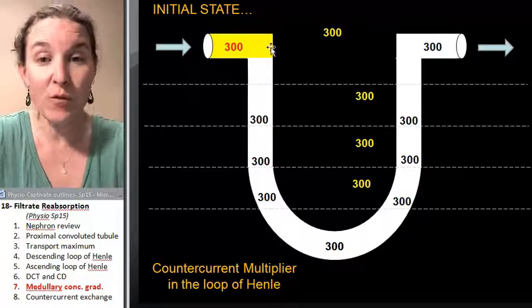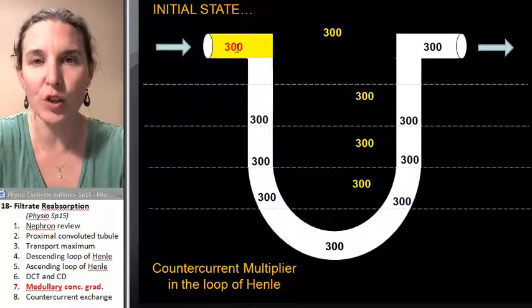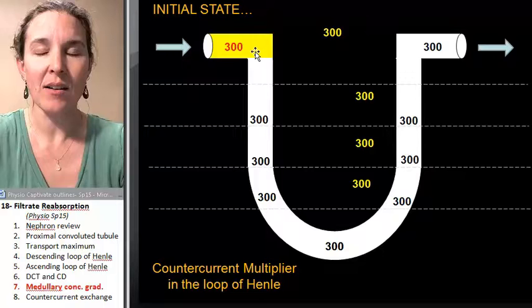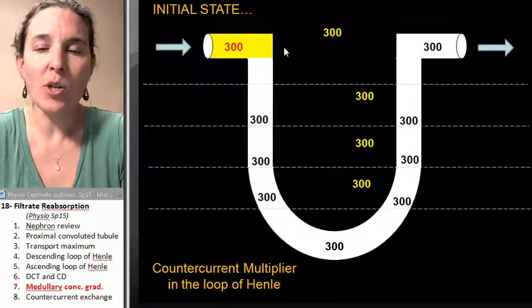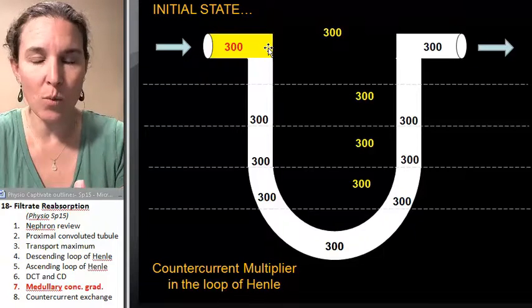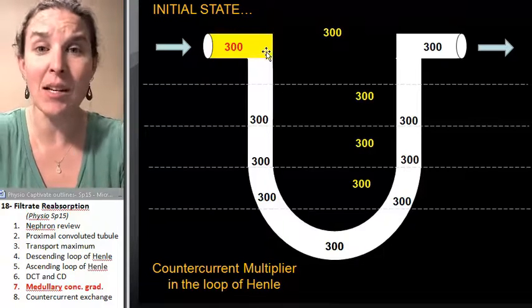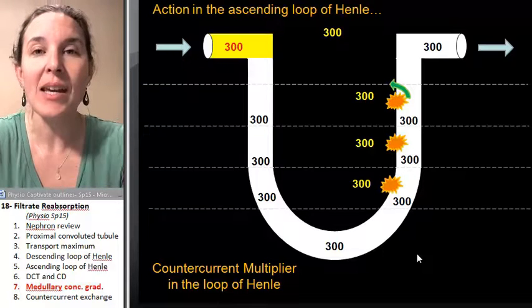So here we are, and this fluid, we're going to follow this fluid, this chunk of fluid that's in the proximal convoluted tubule. We know we're just reabsorbing stuff normally, solutes and water, so we're going to stay isosmotic. If we move forward, here's the scoop.